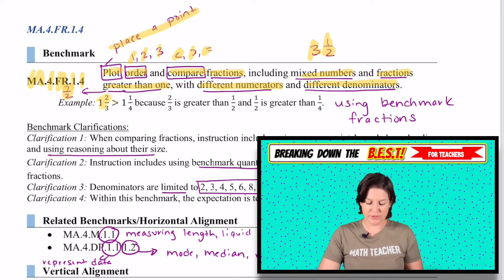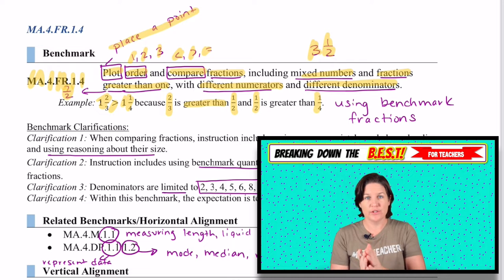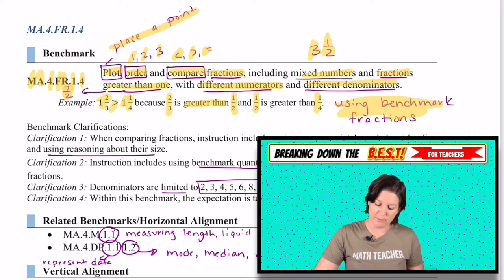Here's an example. It says that one and two thirds is greater than one and one fourth because two thirds is greater than one half, a benchmark fraction, and one half is greater than one fourth. So understanding that two thirds goes past a half and one fourth comes before the half. Students can then use those benchmark fractions in order to compare those numbers.